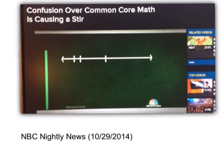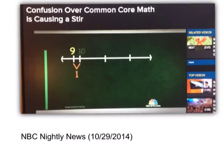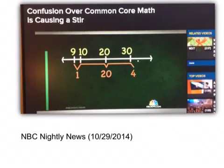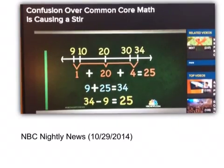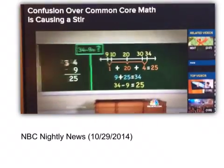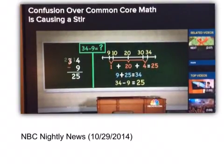One example, using a number line, they can see 9 is 1 away from 10, which is 20 away from 30, and 4 from 34. Add those together to get 25, and if 9 and 25 are 34, 34 minus 9 equals 25. Using three times as many steps to get to the same answer.